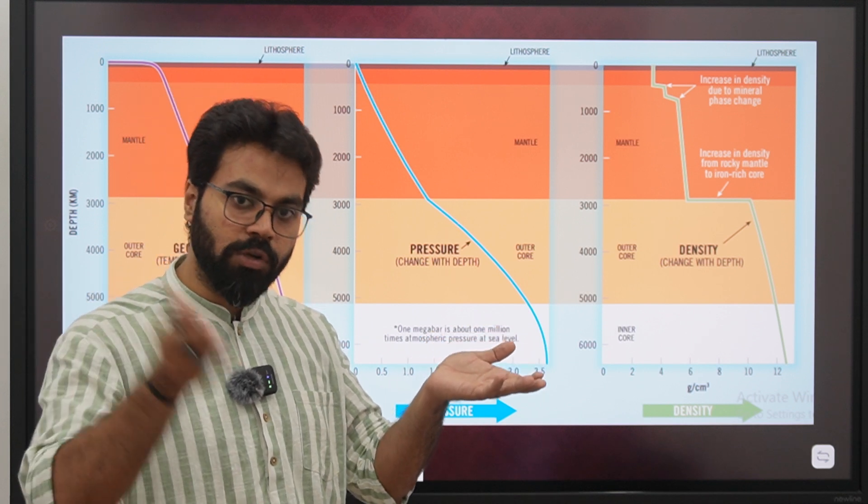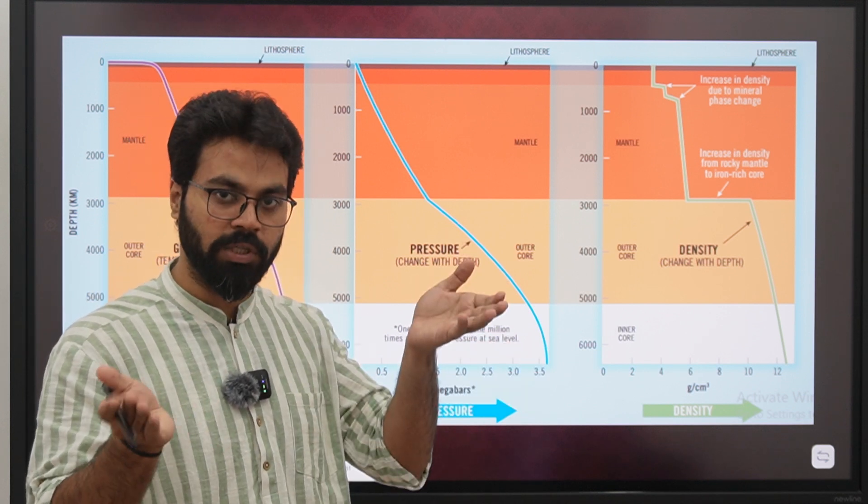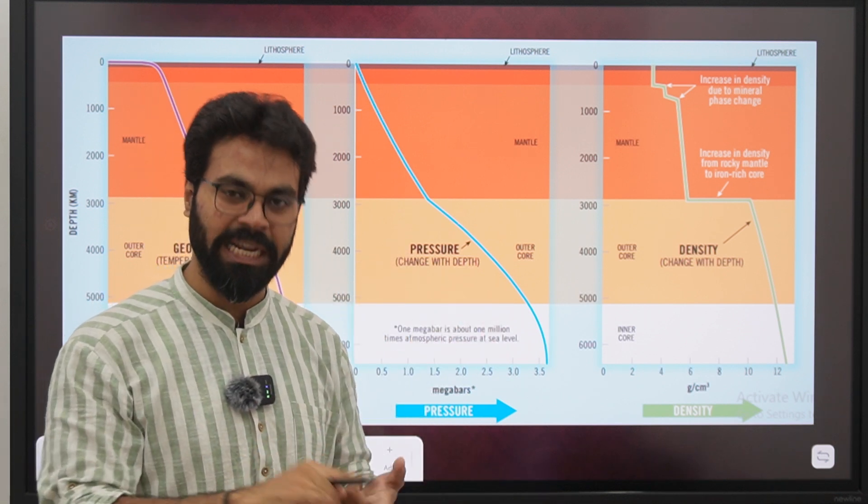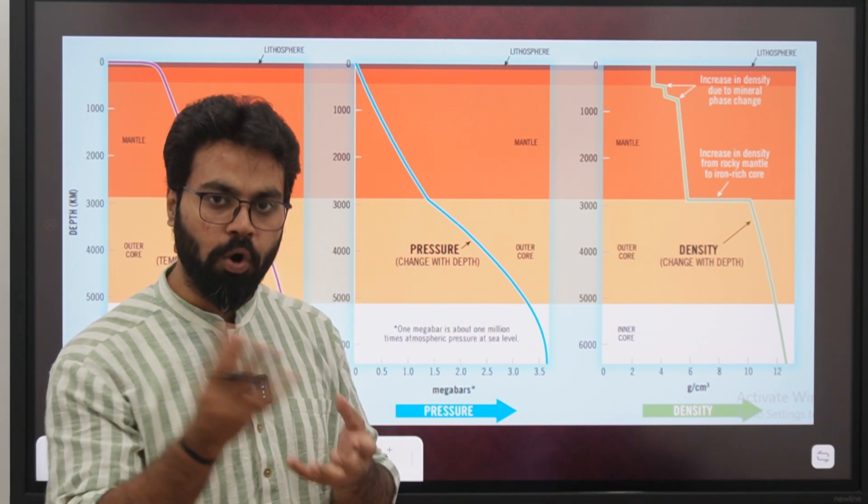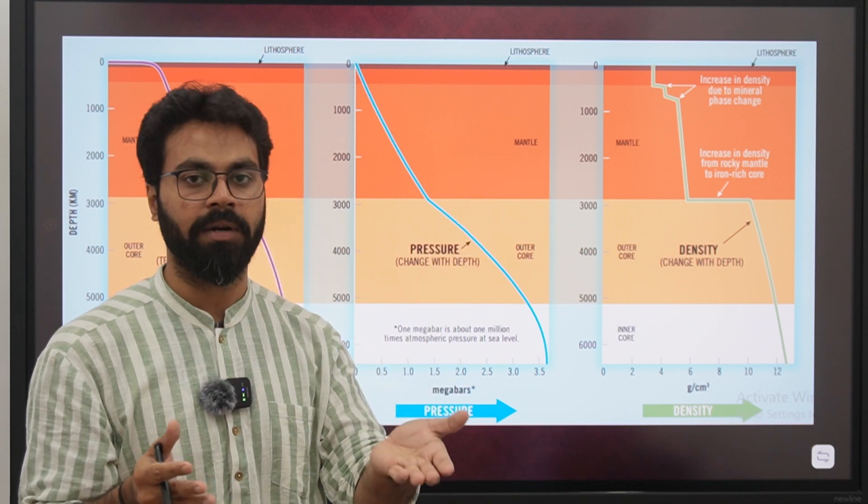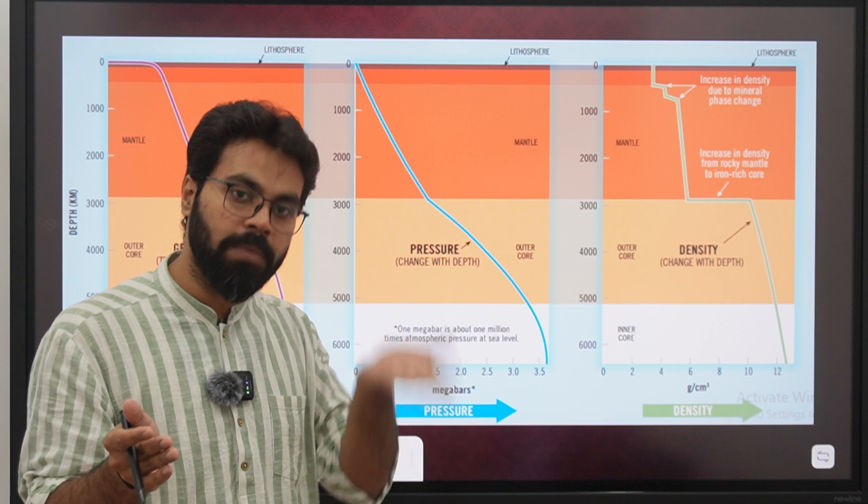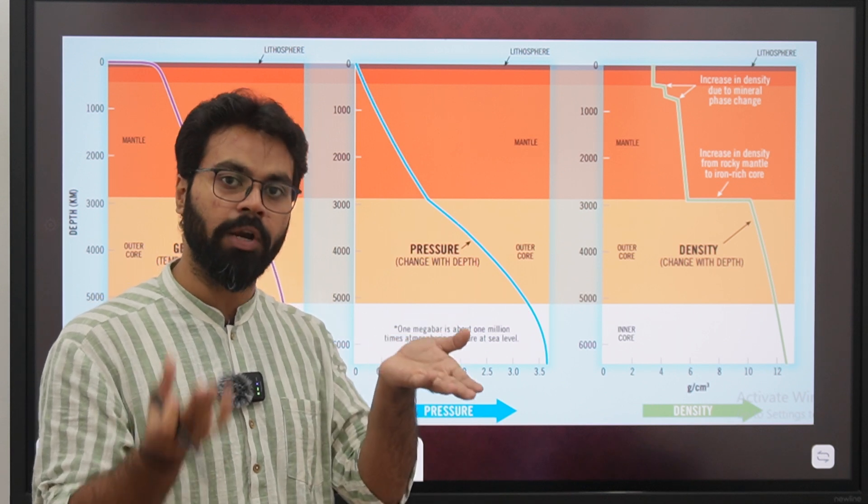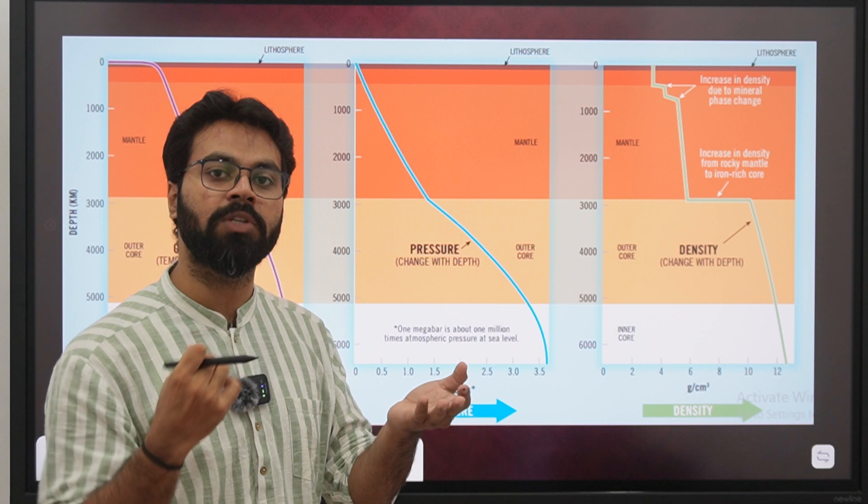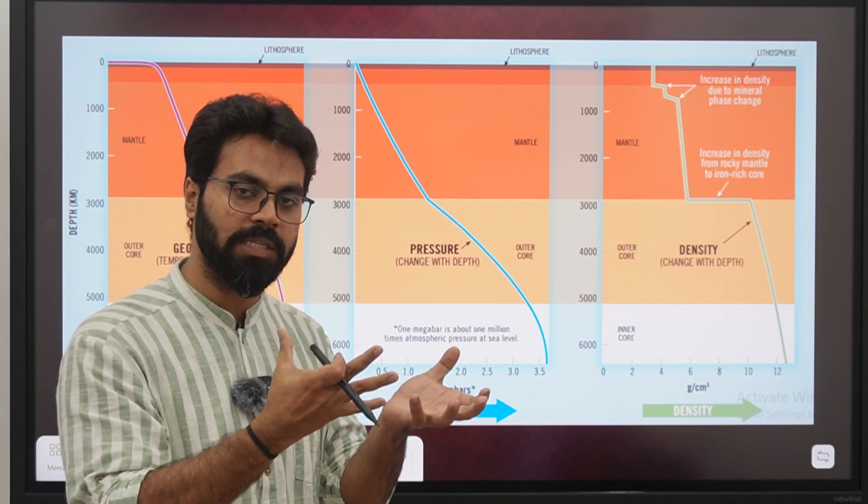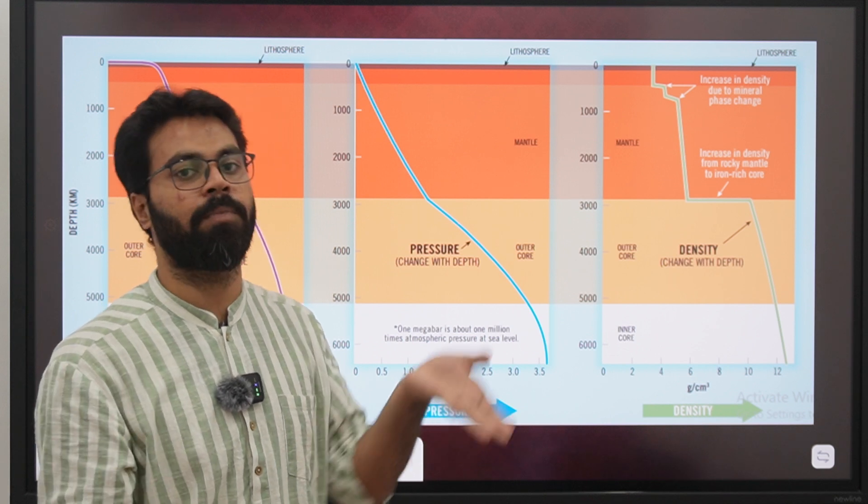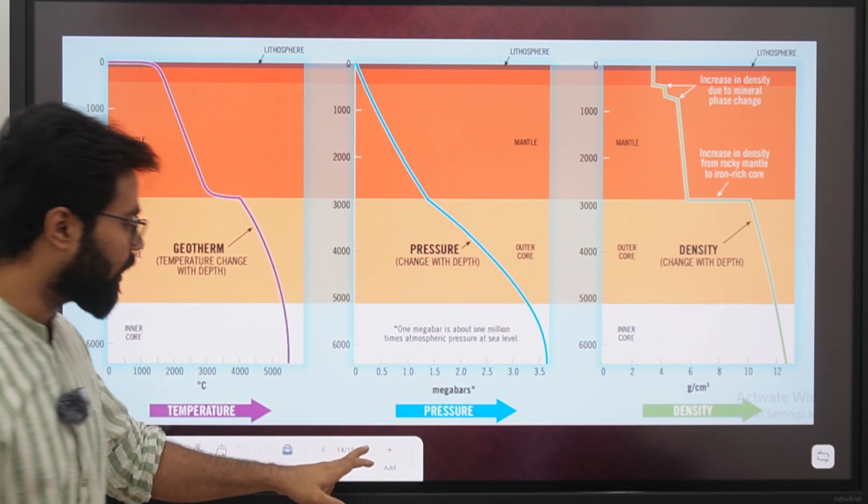Actually, the velocity is an interplay of two-three factors in which pressure, temperature, density, chemical composition - all of them play an important role. Now as we go down, density increases which is a good thing, but temperature is also increasing. The temperature increase reduces rigidity because when we increase solid temperature, rigidity decreases and kinetic energy increases. So the inner core is less rigid as compared to the mantle.